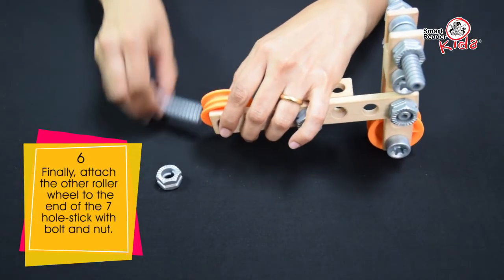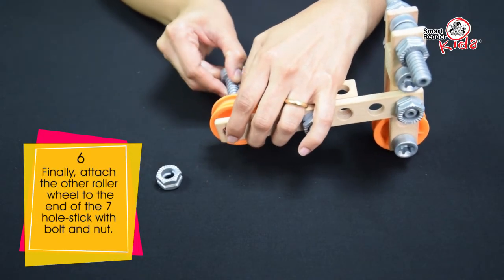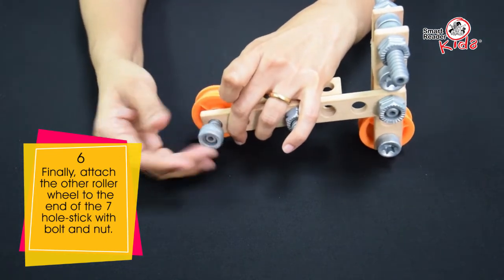Finally, attach the other roller wheel to the end of the 7-hole stick with bolt and nut.